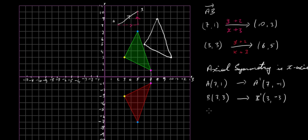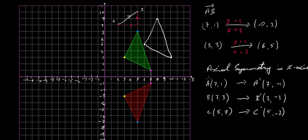For point C at (5, 7), the x stays the same since we're reflecting in the x-axis, and y becomes minus 7. So C prime is (5, -7). If you didn't have an x and y-axis and just had a line, you'd drop a perpendicular, measure with a ruler, and measure the same distance on the other side. The axis doesn't have to be horizontal or vertical — it can be at an angle — but you need to drop a perpendicular to it. That's axial symmetry in the x-axis.